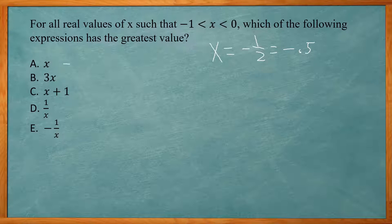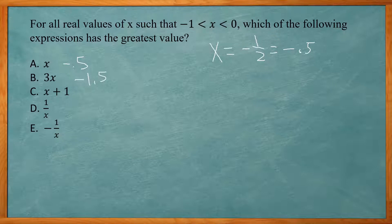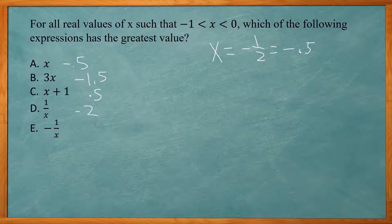Plugging in negative 0.5: answer choice A is just x, giving negative 0.5. Choice B is 3 times negative 0.5, giving negative 1.5. Choice C is negative 0.5 plus 1, giving positive 0.5. Choice D is 1 divided by negative 0.5, giving negative 2. Choice E is negative 1 divided by negative 0.5, giving positive 2. So answer choice E gives the greatest value.